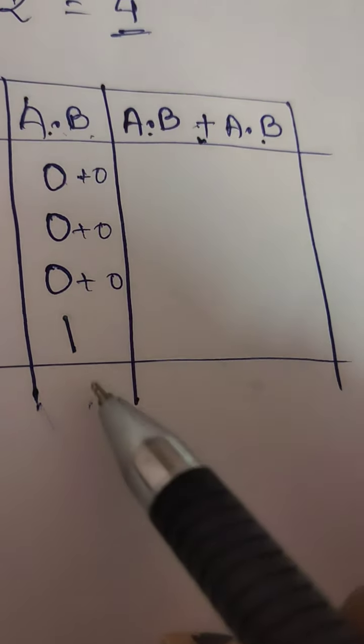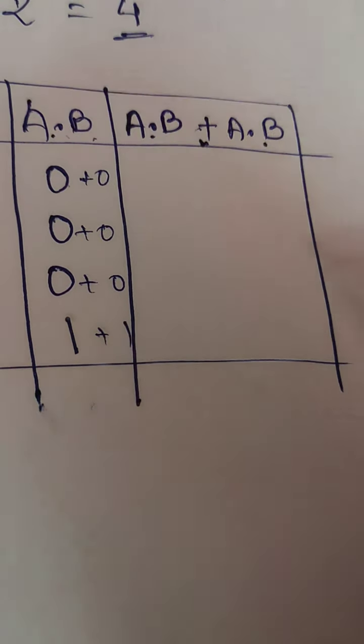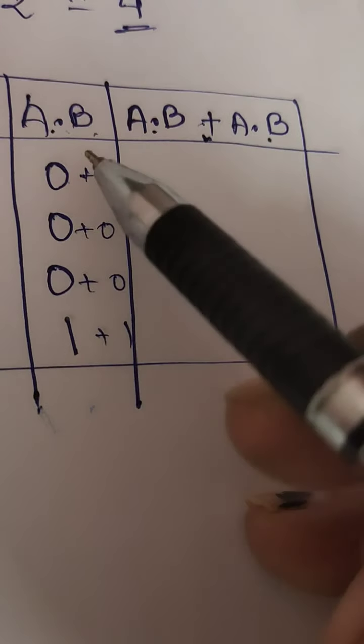So A·B plus A·B, which means plus, plus, and then plus one, isn't it? So this is done.